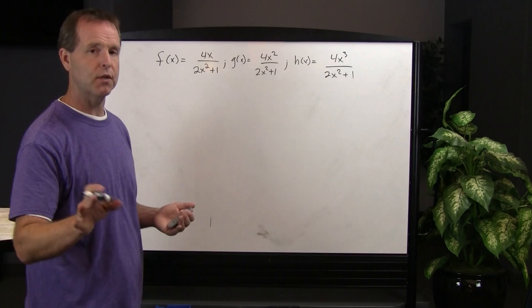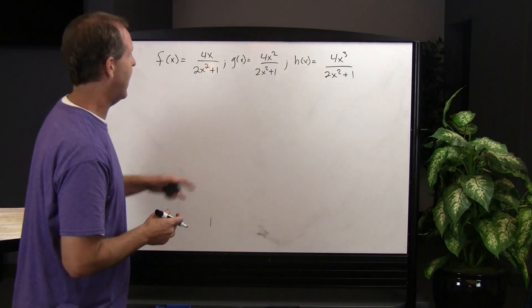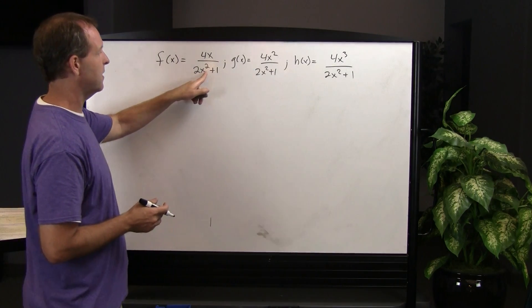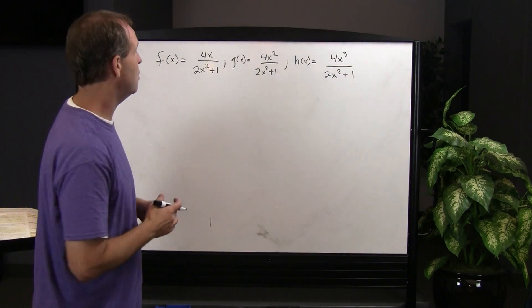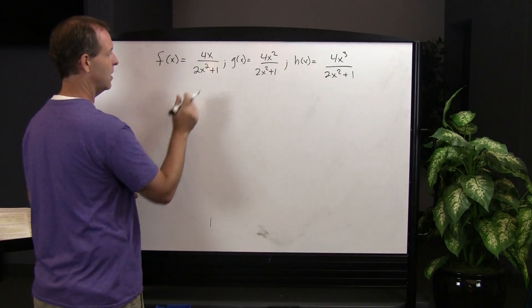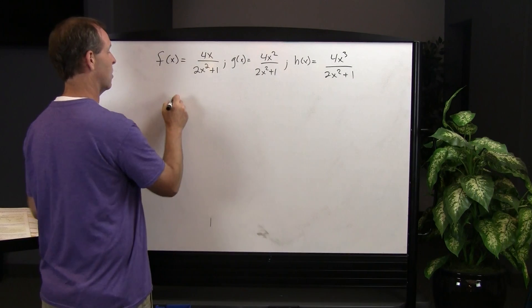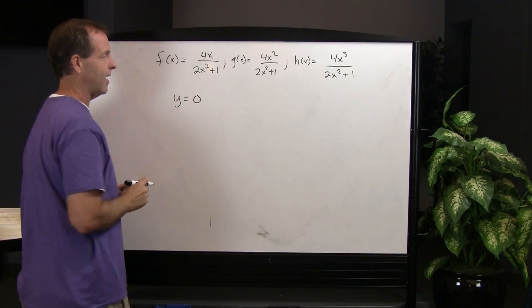Three different examples, three different things that are going to happen. In this first one, notice that the degree of the denominator is greater than the degree of the numerator. In that case, we have a horizontal asymptote at the line y equals zero.